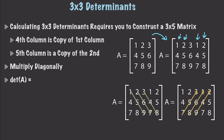Then you're going to multiply the values 1, 5, and 9 times each other. Then take 2, 6, and 7 and multiply those together. Then take 3, 4, and 8 and multiply those together. Then sum the results. Then starting in the lower left-hand corner, take 7, 5, and 3; then 8, 6, and 1; then 9, 4, and 2 — multiply each group together and sum those. Then subtract the two sums from each other, and that gives you the determinant.